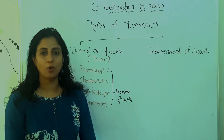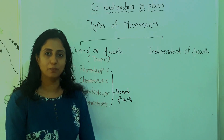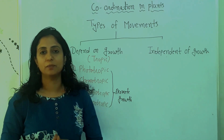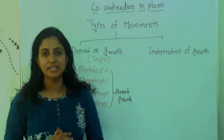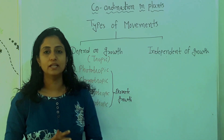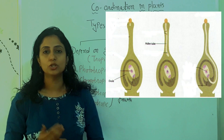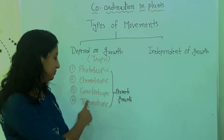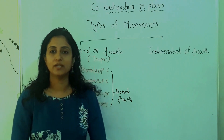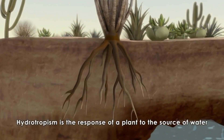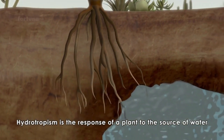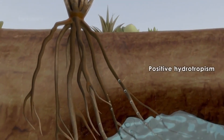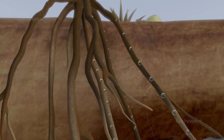Now we will see the next tropic movement, which is chemotropic movement. Chemotropic movement is the movement of a part of the plant in response to certain chemicals. For example, the movement of the pollen tube toward the ovule is a type of chemotropic movement. The next tropic movement is geotropic movement — the root system of a plant responds to stimuli like gravity and water, which is known as geotropic movement or hydrotropic movement respectively.